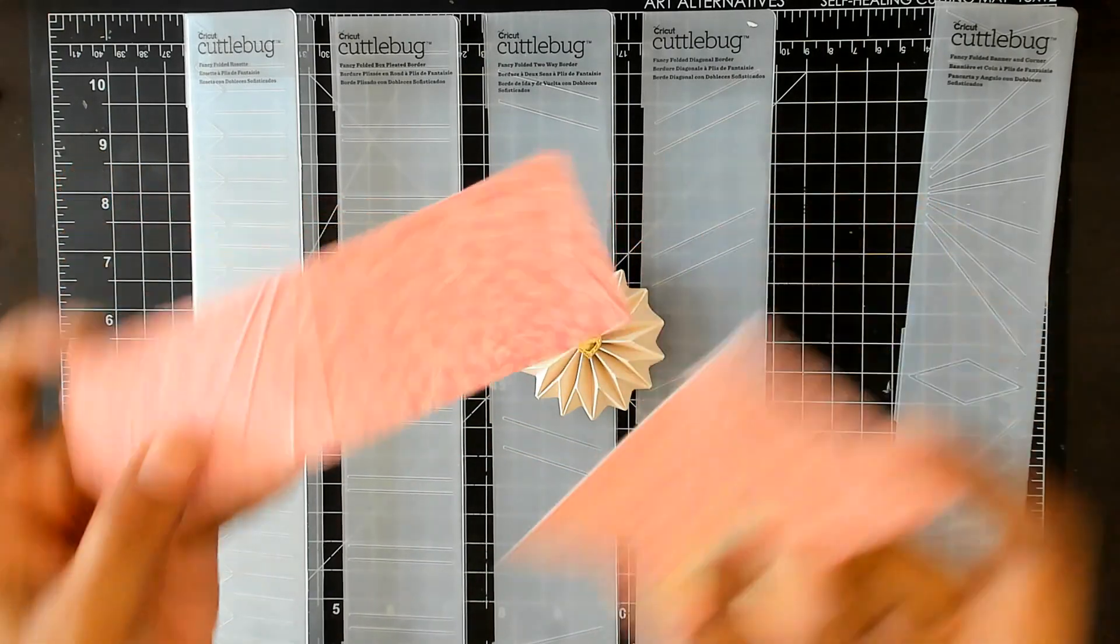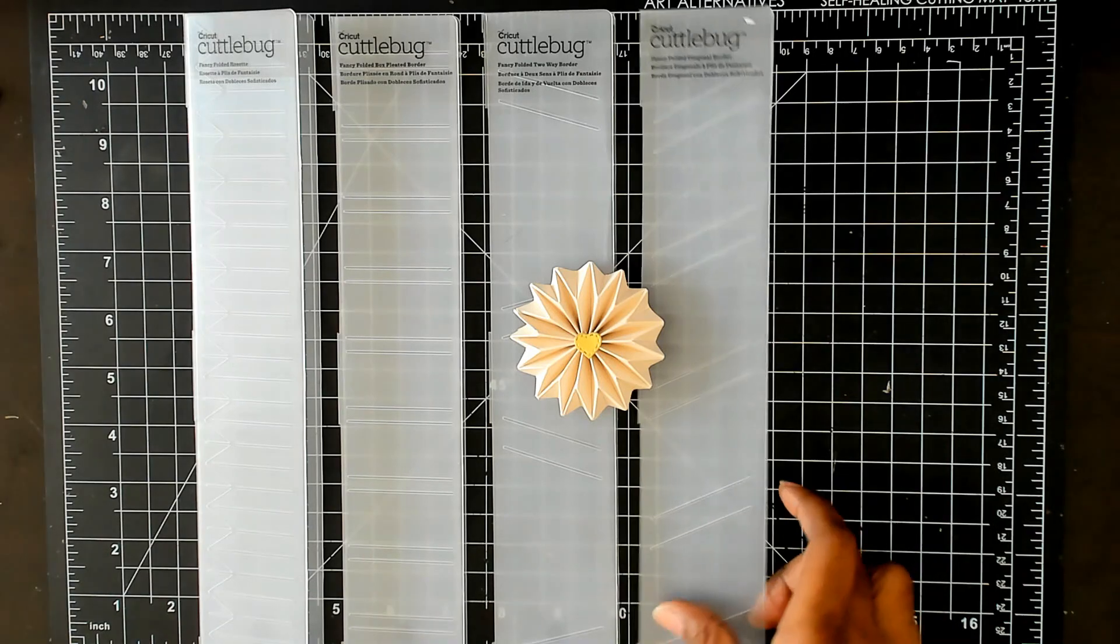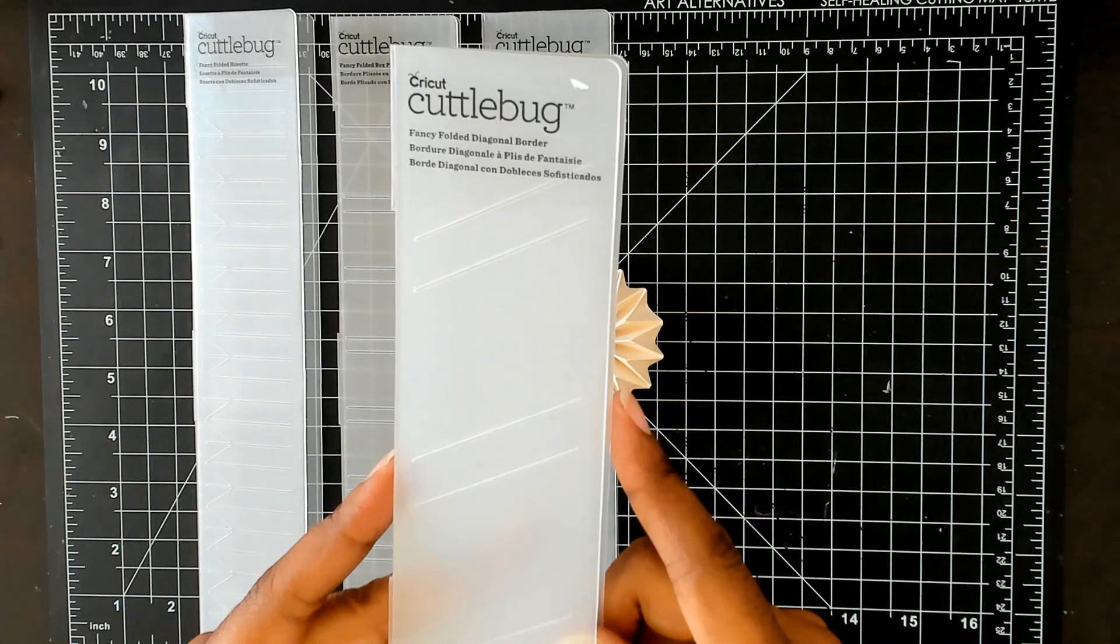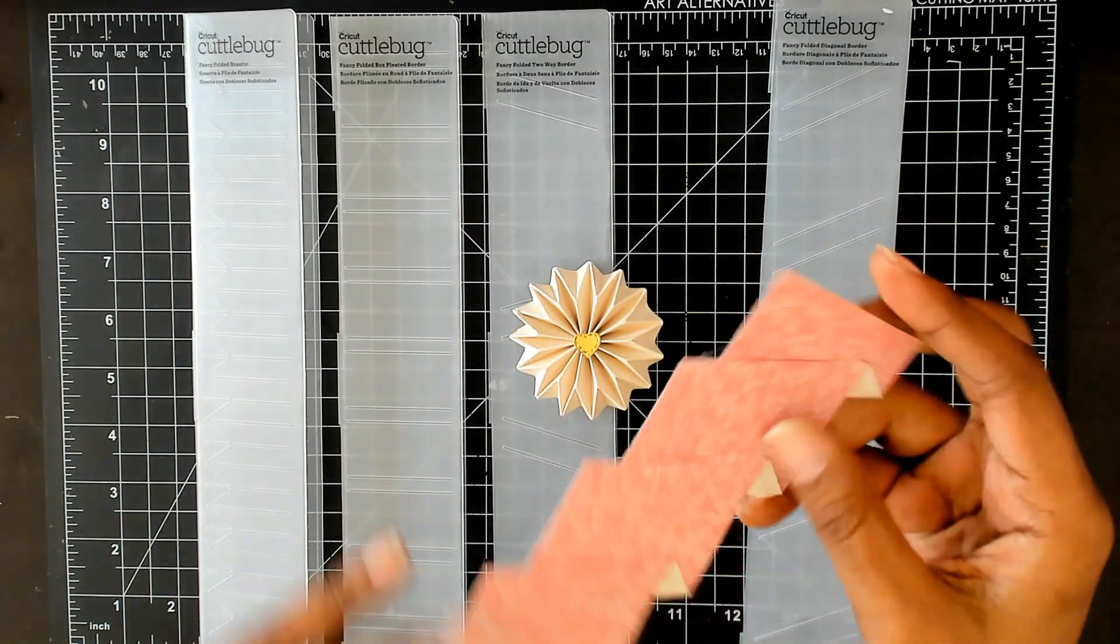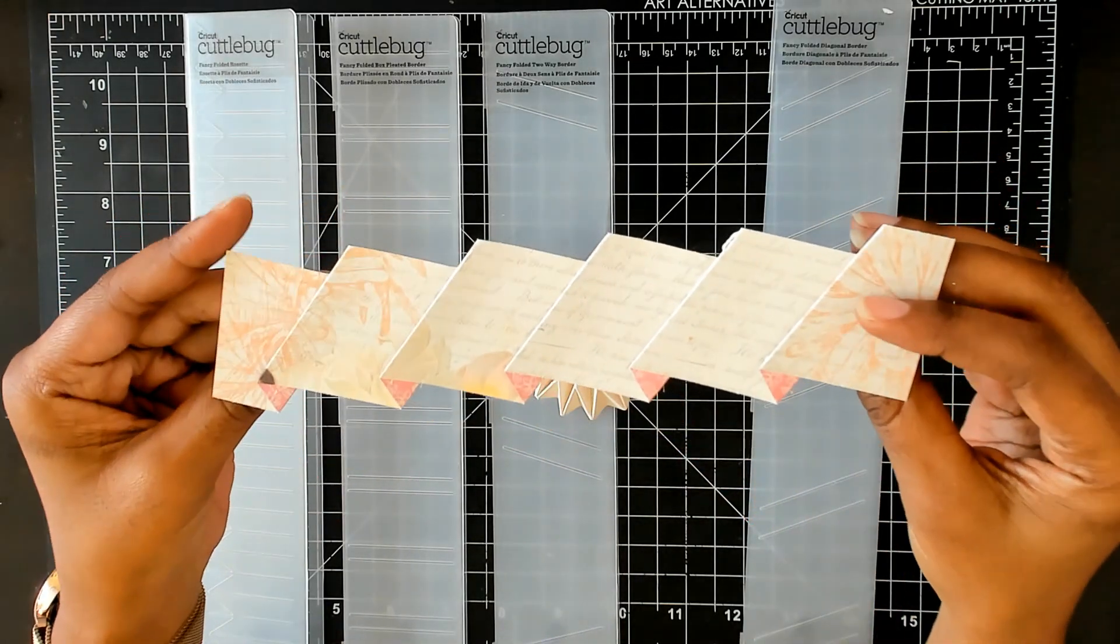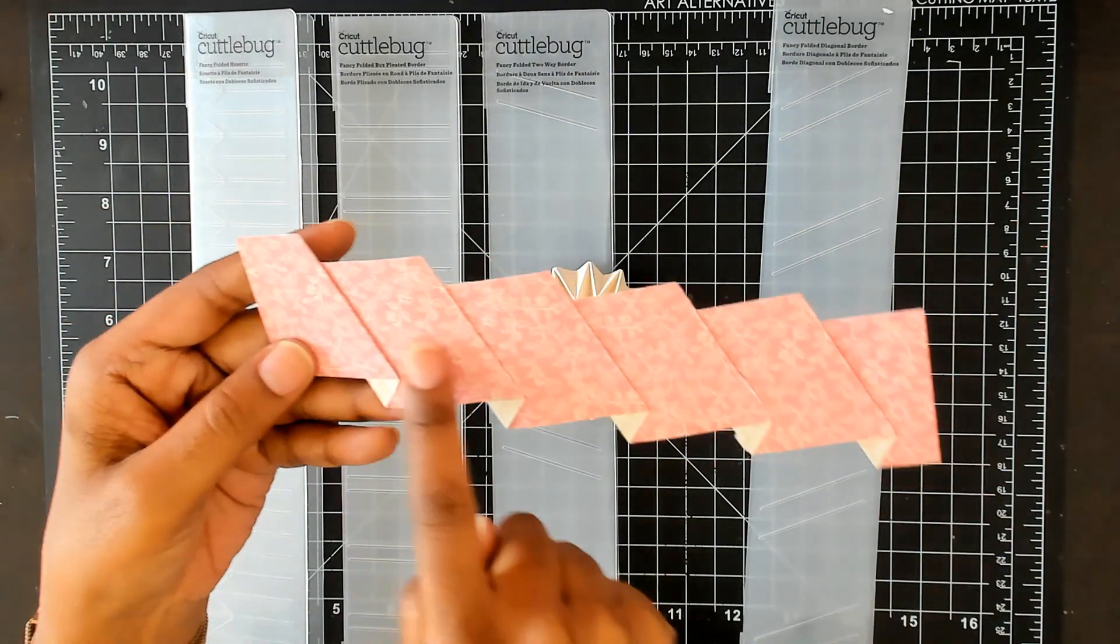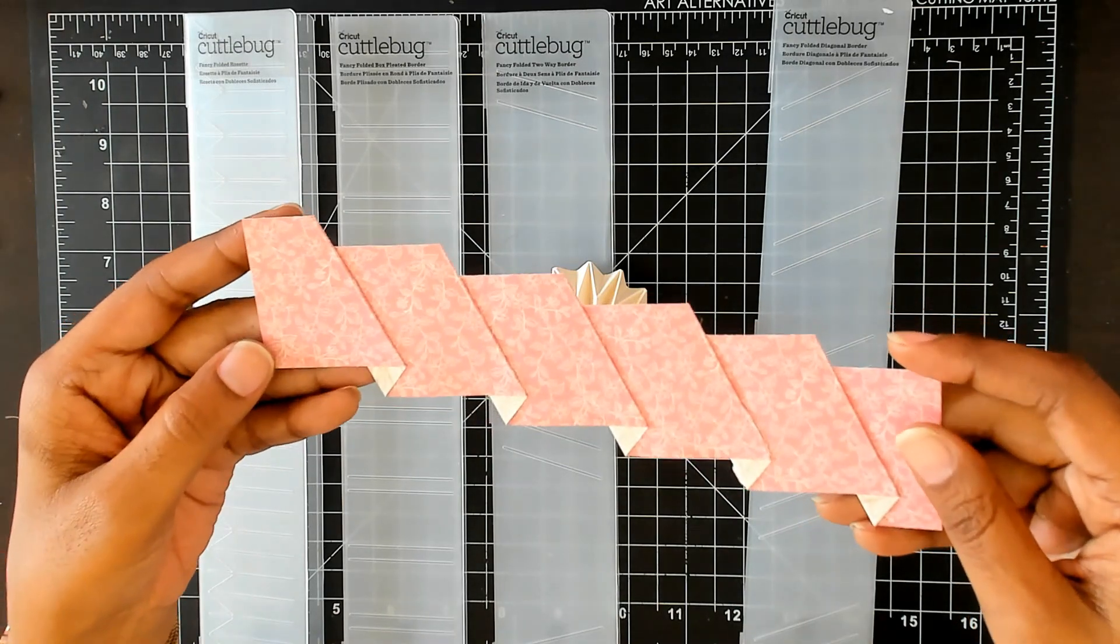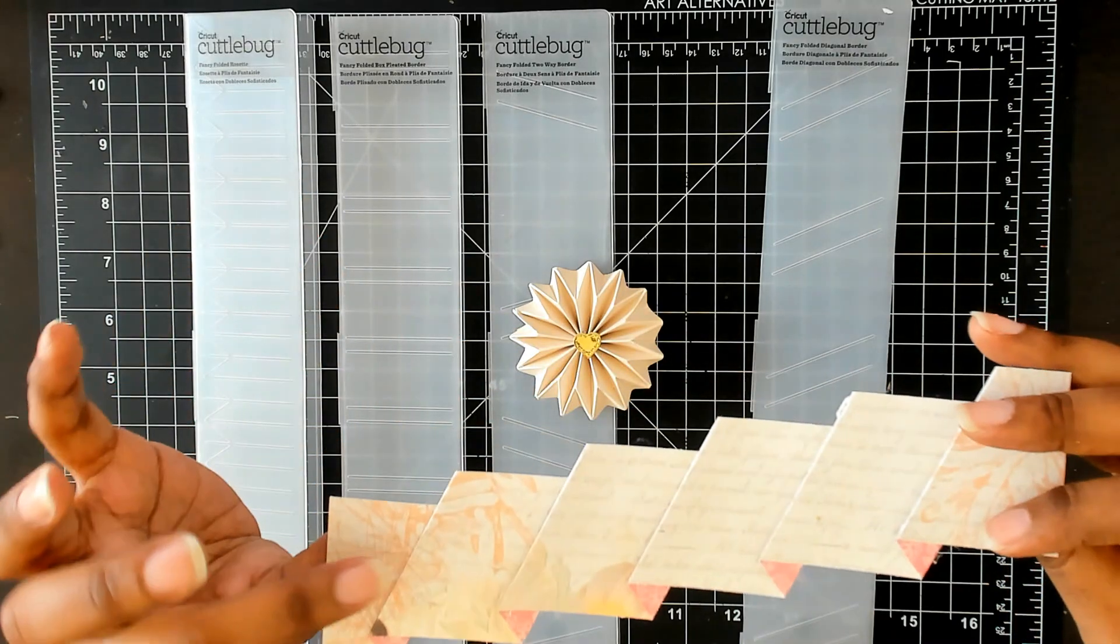And then this one here is called the Fancy Folded Diagonal Border and this one is probably one of my favorites. This one looks like this and it is so pretty. I've used double-sided paper for it and if you guys wanted to you could just stitch all the way across here for that extra detail.